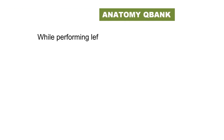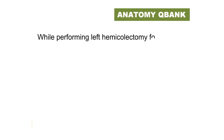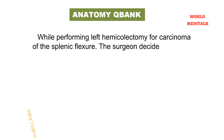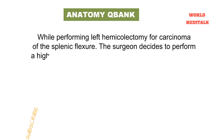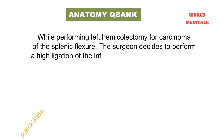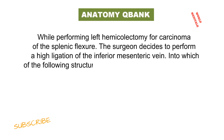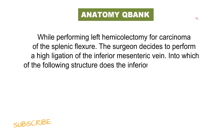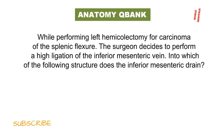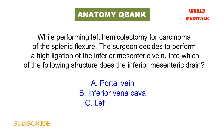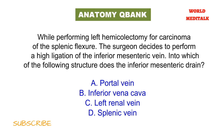While performing a left hemicolectomy for carcinoma of the splenic flexure, the surgeon decides to perform a high ligation of the inferior mesenteric vein. Into which of the following structures does the inferior mesenteric vein drain? Portal vein, inferior vena cava, left renal vein, or splenic vein? Pause the video and think about the answer.